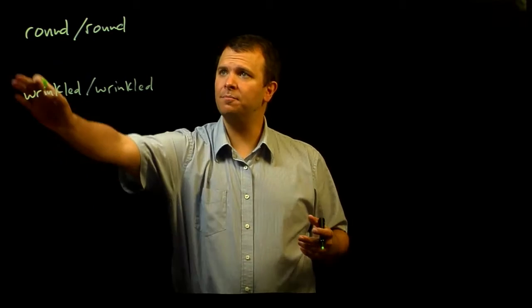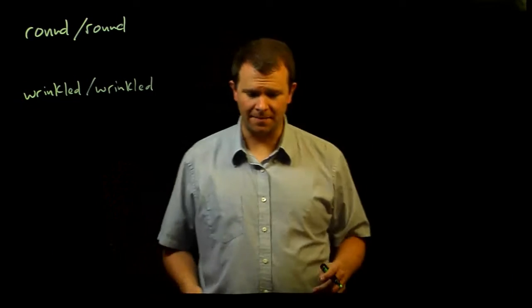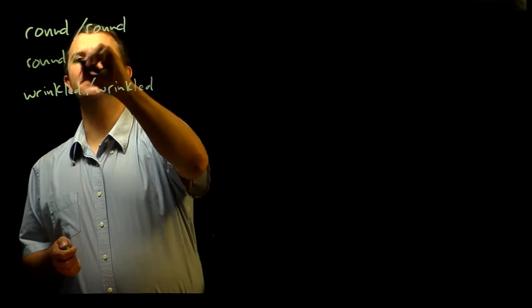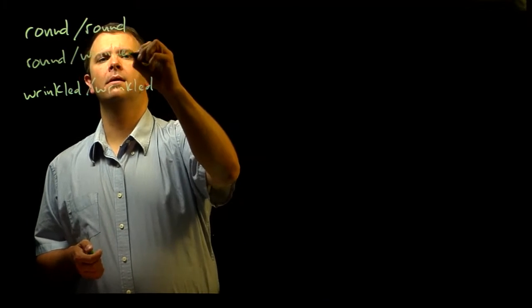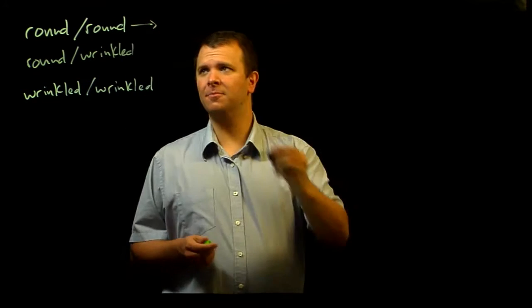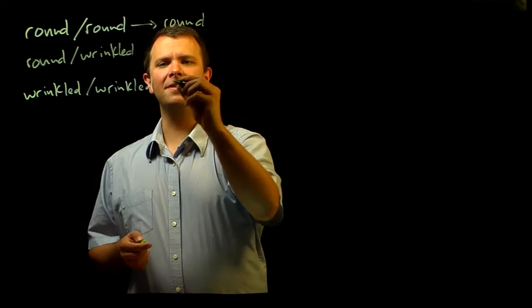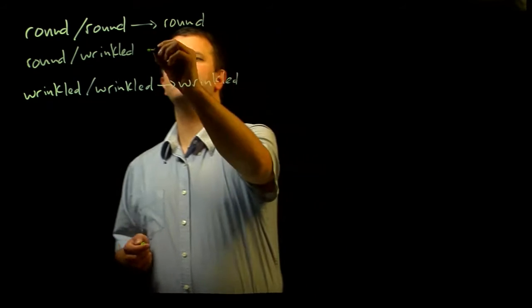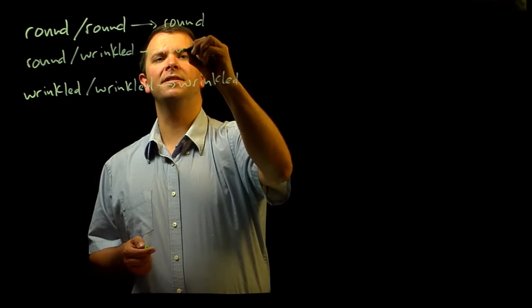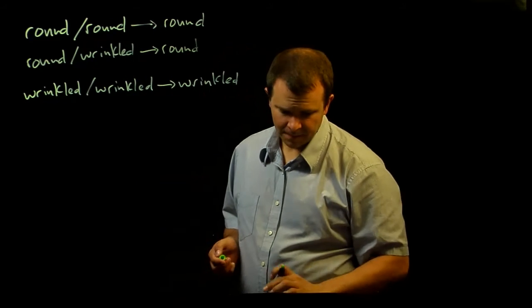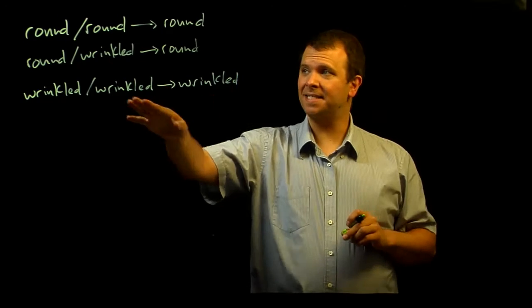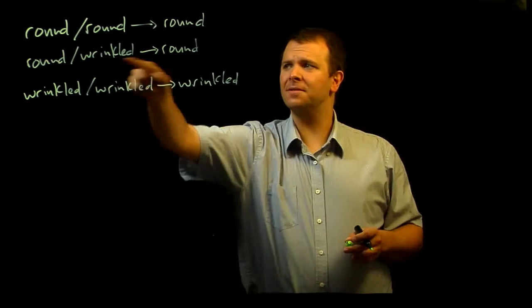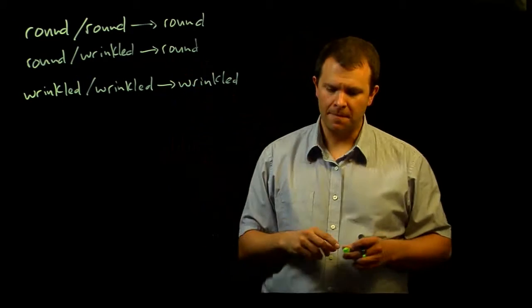However, when he took these two plants and crossed them, he created a heterozygote with one round allele and one wrinkled allele. While this homozygote resulted in round seeds and this homozygote resulted in wrinkled seeds, the heterozygote resulted in round seeds. We say that in this case, the round allele is dominant over the wrinkled allele because in the heterozygote, it's the round allele that shows up in the phenotype.